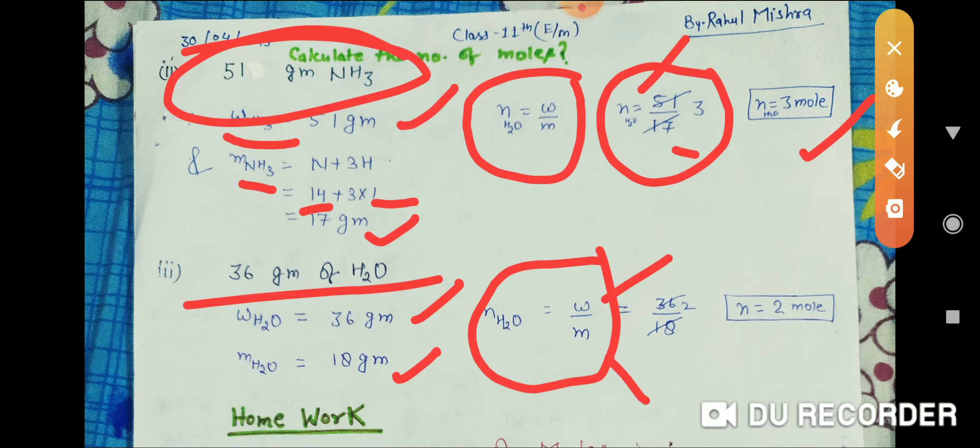...water divided by molecular mass of water. So it equals 36 divided by 18. On calculating, the number of moles equals 2 moles. This means 2 moles are present in 36 grams of H2O.